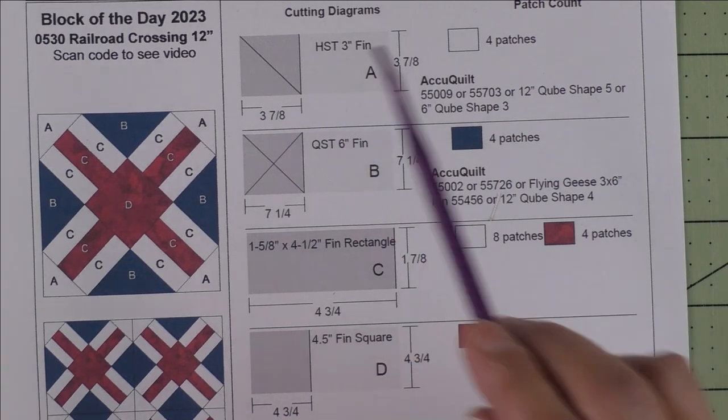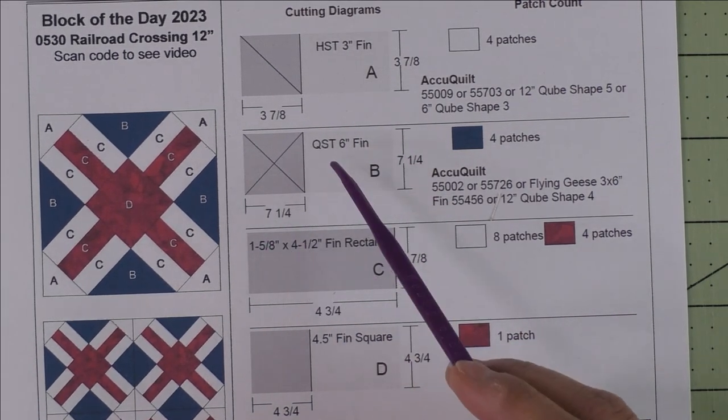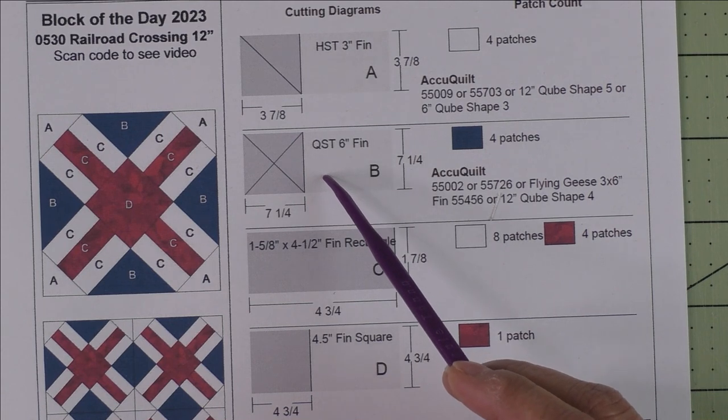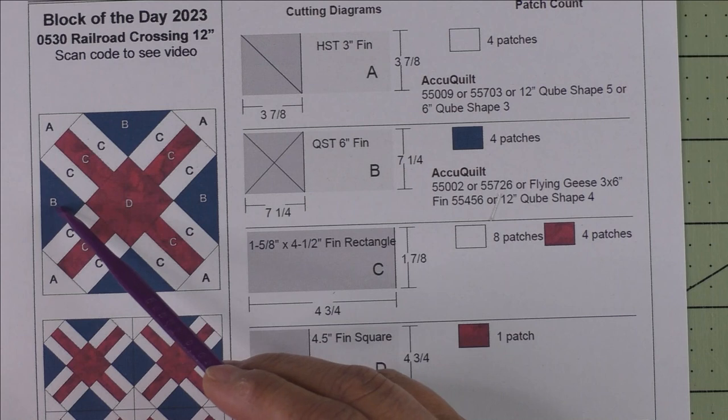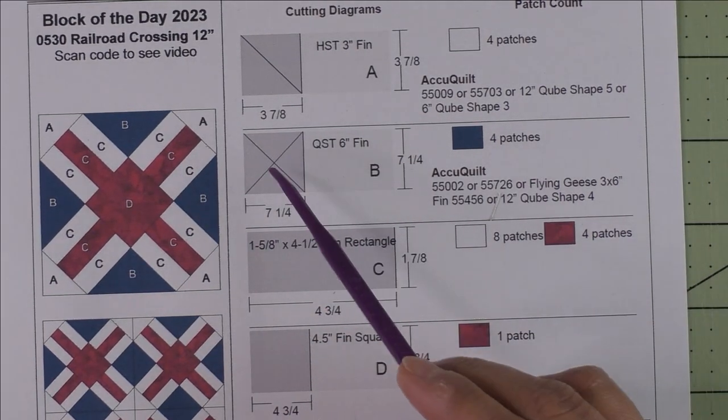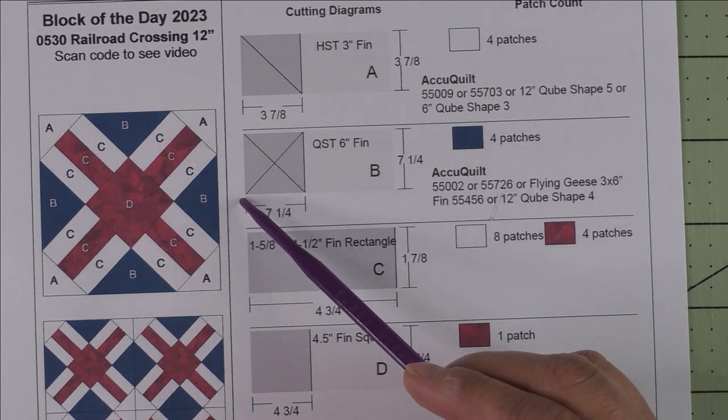Patch B is a six inch finished quarter square triangle, and that is these large triangles here on the sides. We cut one square at seven and a quarter inches, cut it in half diagonally twice, and you'll get your four patches.